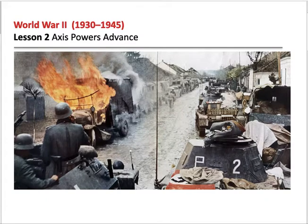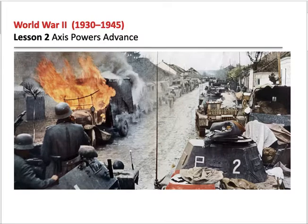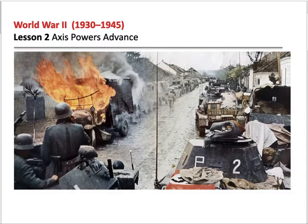We'll be looking at lesson two, the Axis powers advance. The Axis powers are Germany, Italy, and Japan. The United States is not in the war at this time. It's mainly Britain, France, and the Soviet Union in this alliance to fight back the Germans.